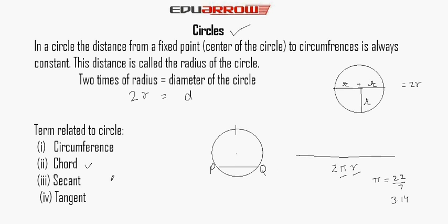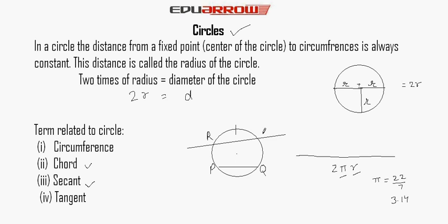Now we read about secant. A line which intersects a circle in two distinct points is called a secant of the circle. This line cuts the circle at two points, point R and S. This line is called the secant of the circle.